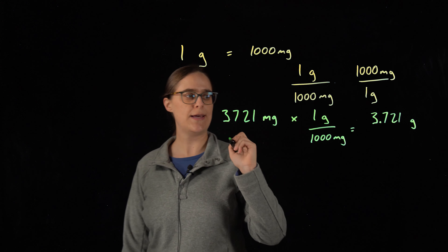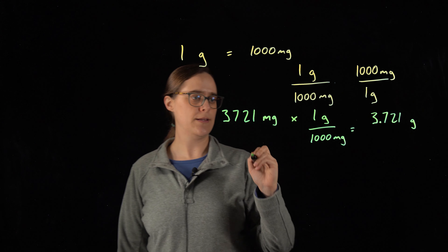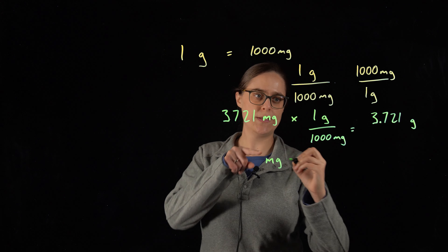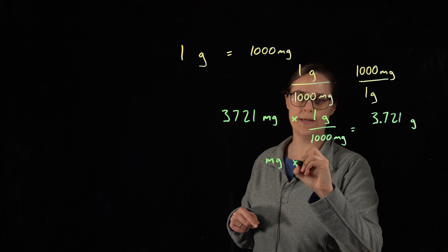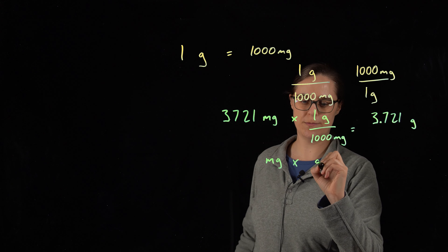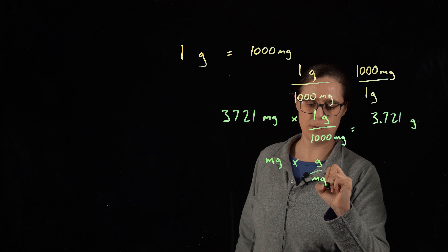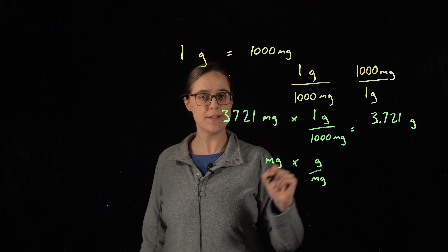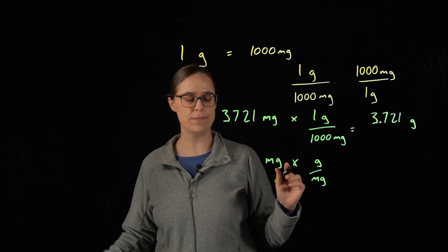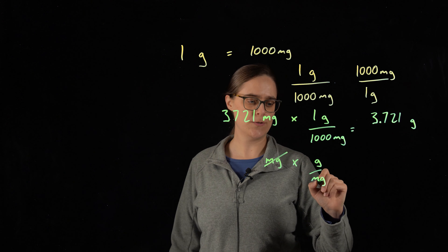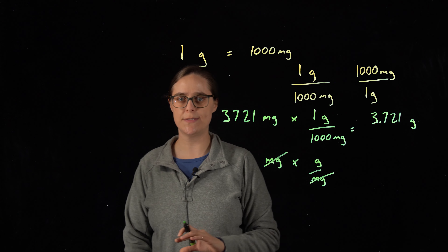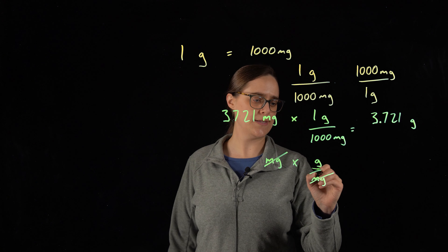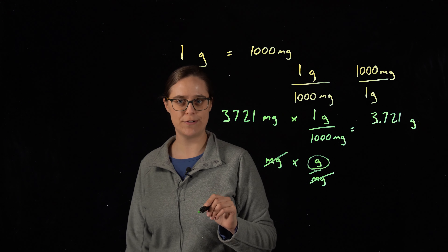Let's look at just the units. I'm going to rewrite this with only the units — milligrams times grams over milligrams. Whenever you have some unit divided by itself, they completely cancel each other out. So milligrams divided by milligrams cancels, and the units I am left with are just grams.